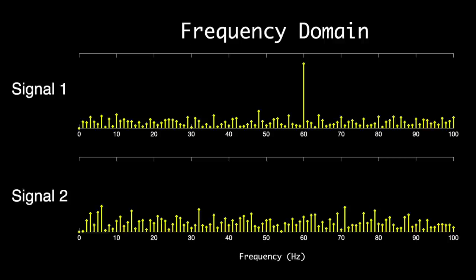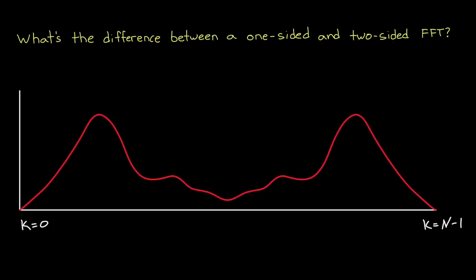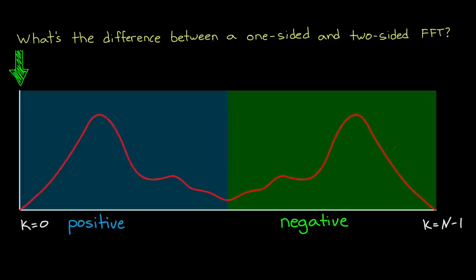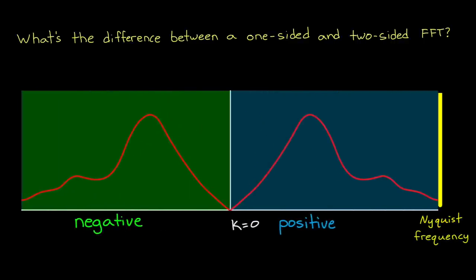Alright, so for the next question, I want to talk about what the difference is between a one-sided and two-sided FFT. The answer involves understanding that the FFT returns both the positive and the negative frequencies. So two sides. And if you take the FFT starting at k equals zero and go up to k equals n minus one, then the positive frequencies are on the left and the negative frequencies are on the right. And the Nyquist frequency is the boundary between the two. This is based on the Nyquist sampling theorem, which states that we can only know signal information up to one half of the sampling rate. Now, sometimes it's helpful to shift the FFT such that the negative signals are on the left and the positive are on the right. But it's not necessary as long as you understand which are negative and which are positive.